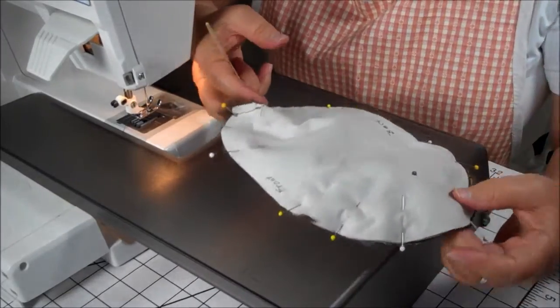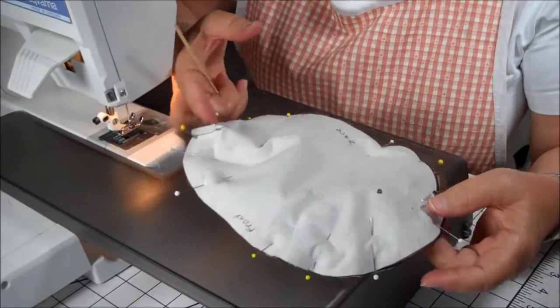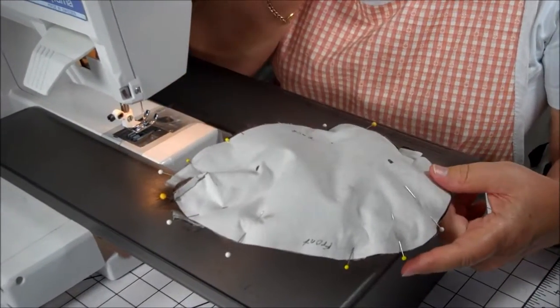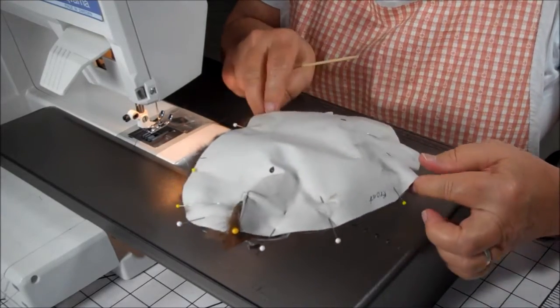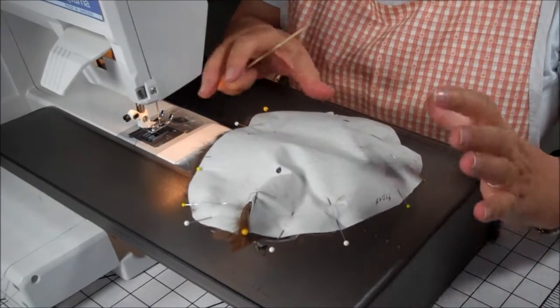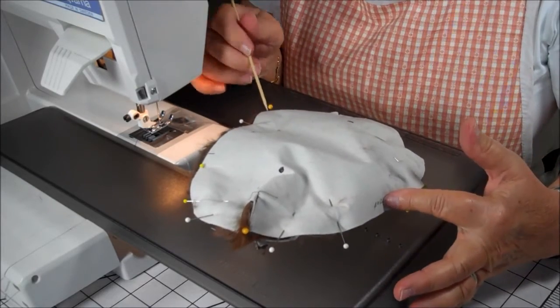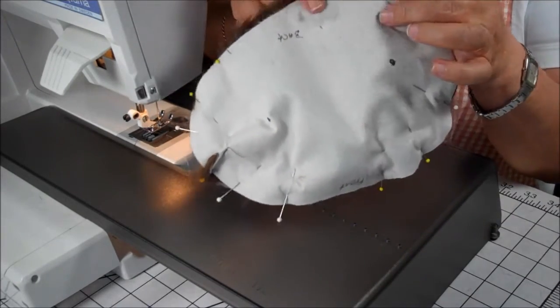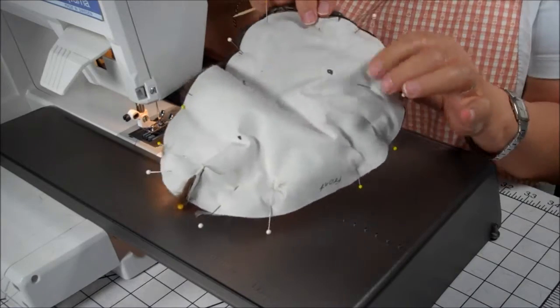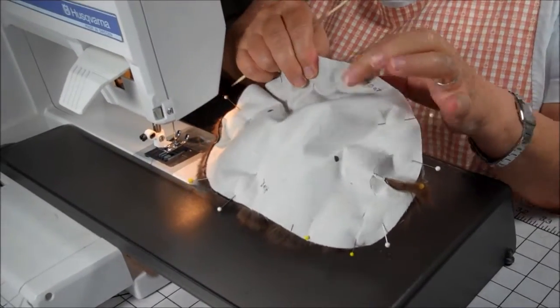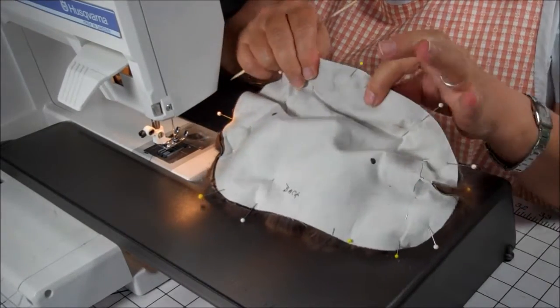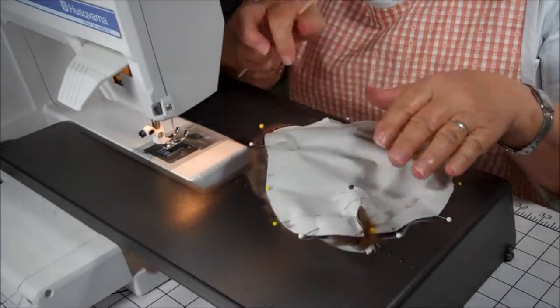We now have the two body sections pinned together and I'm going to start sewing. What you'll notice as I'm sewing is that I have to work the fur into the machine because it doesn't always sew or pin together very straight. So you'll see me tugging and working with it.